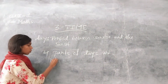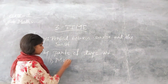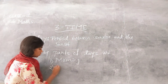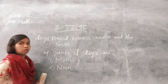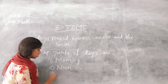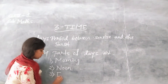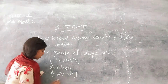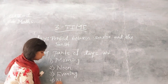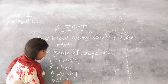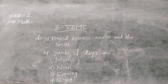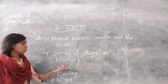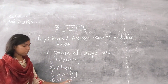The first one is morning, the second one is noon, the third one is evening, and the fourth one is night. So there are four parts of the day: morning, noon, evening, and night.